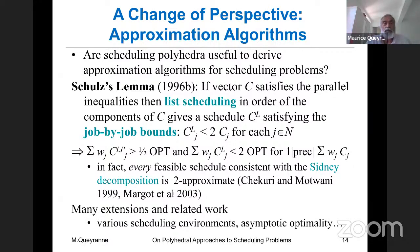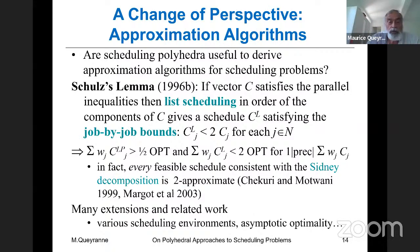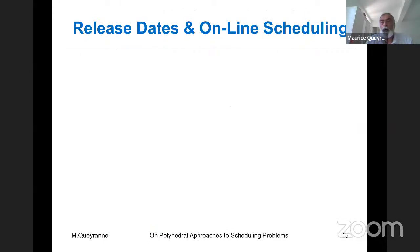In fact, there is a stronger result: every feasible schedule consistent with a certain decomposition introduced by Jeff Sidney in the 1970s is also a 2-approximation. This was shown independently and also in our work with François Margot. These approximation algorithm types have been extended and studied in various scheduling environments, with some asymptotic optimality consequences.